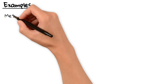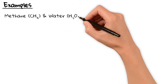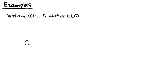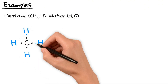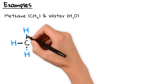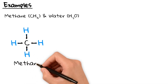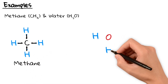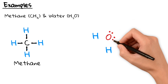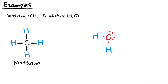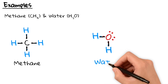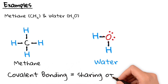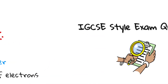Let's look at two important examples: methane (CH₄) and water (H₂O). Methane is made of one carbon atom and four hydrogen atoms. Carbon needs four more electrons and each hydrogen needs one. They share electrons, forming single covalent bonds. Remember, in covalent bonding, atoms always share electrons instead of transferring them.